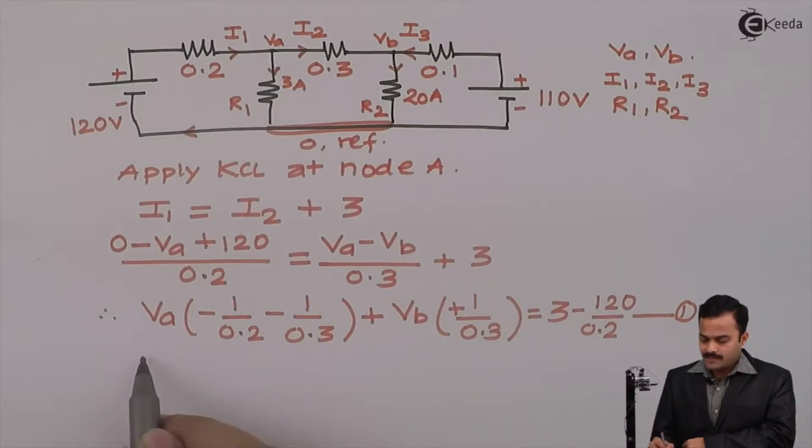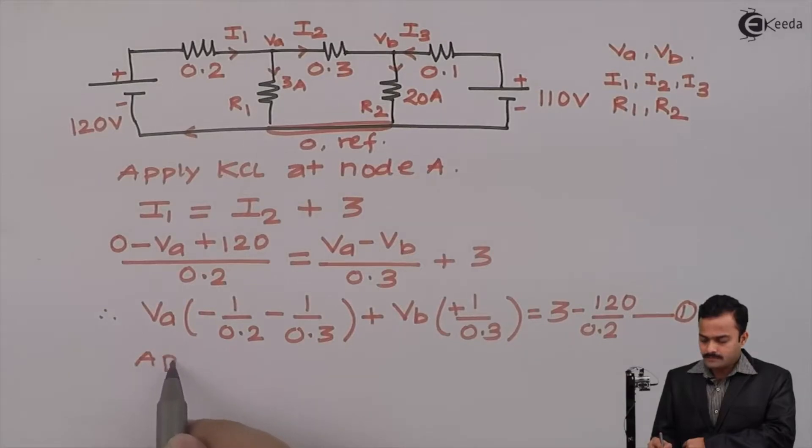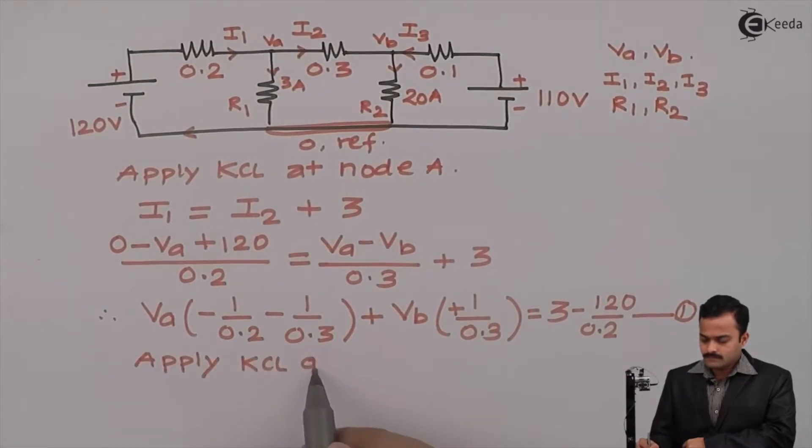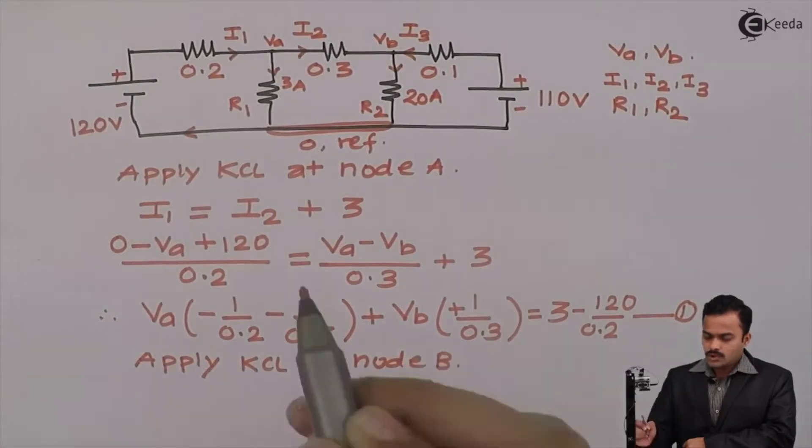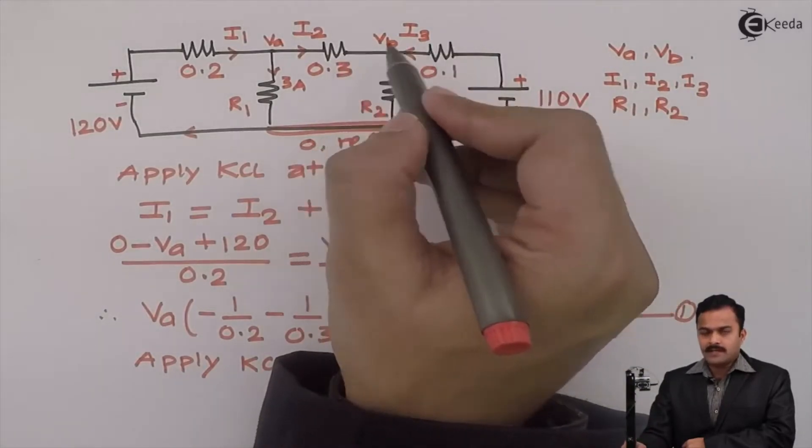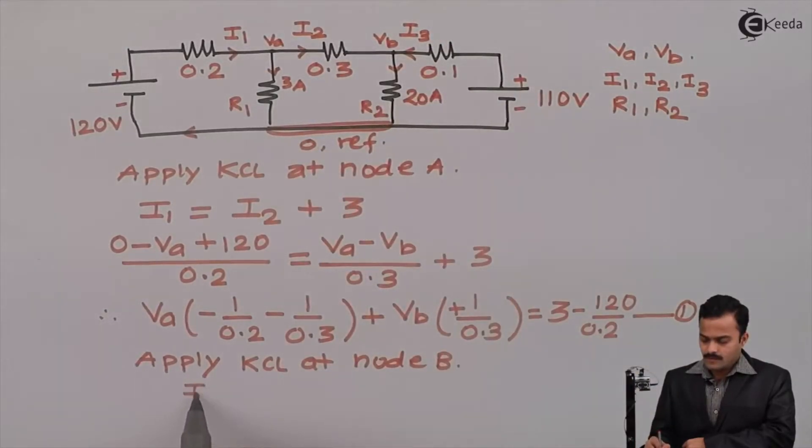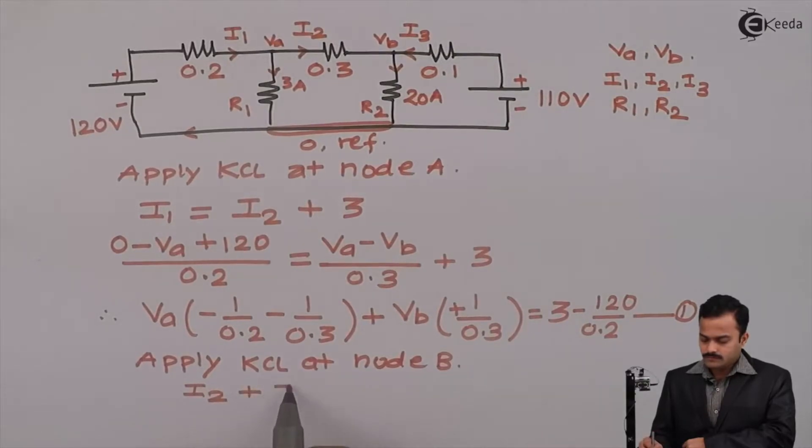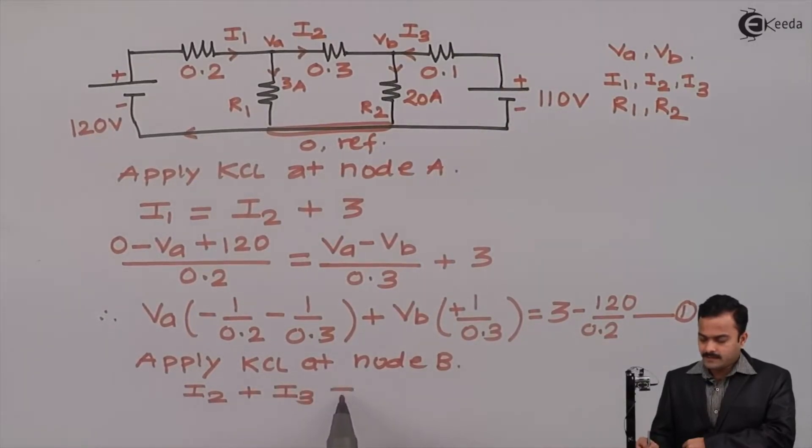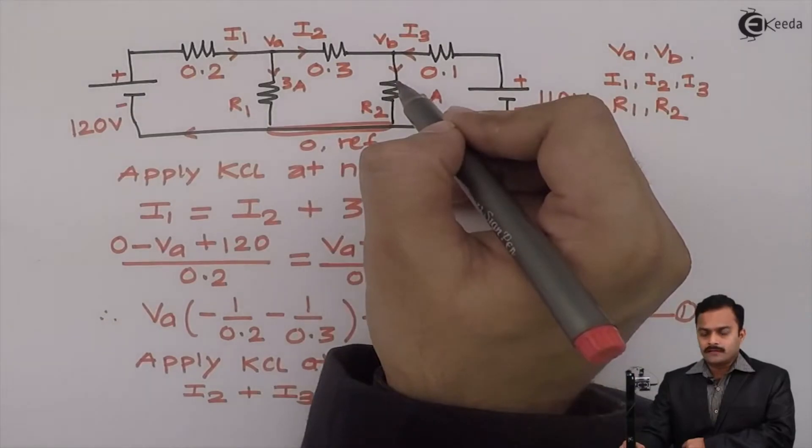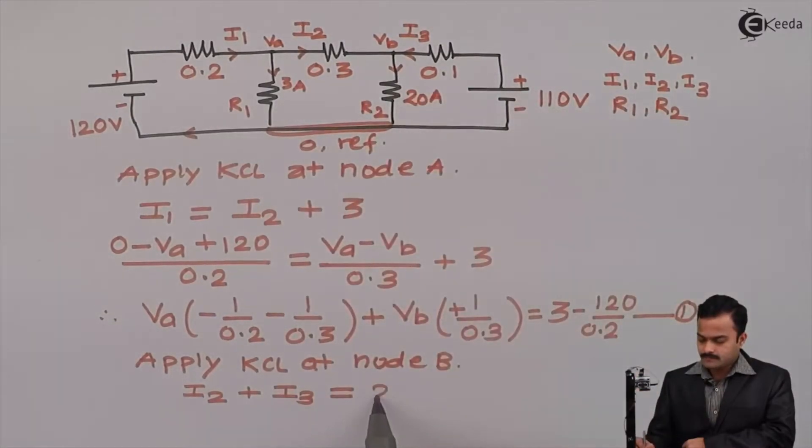Similarly, I can apply KCL at node B. At node B, I am having two incoming currents. Vb minus I2 and I3 equal to outgoing current which is given as 20A equal to 20A.